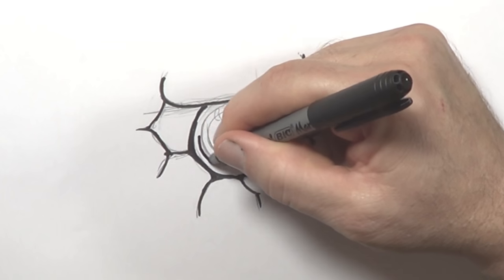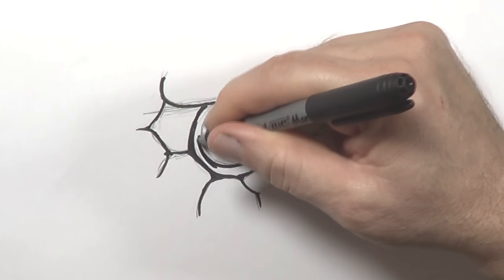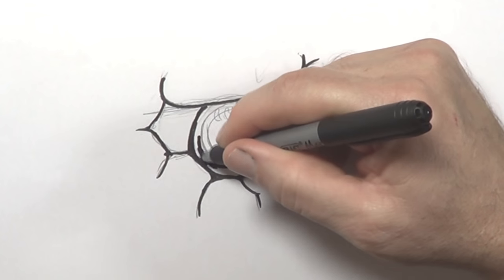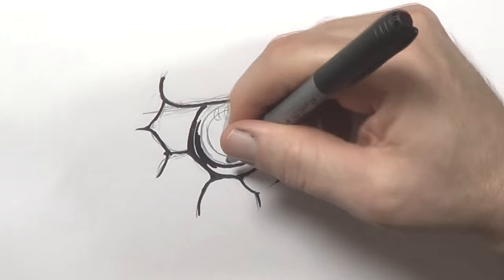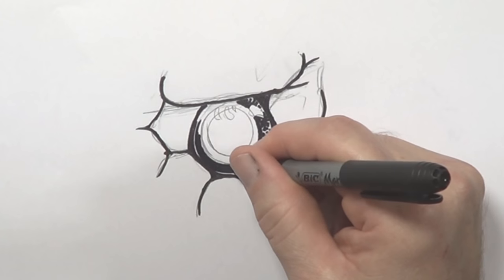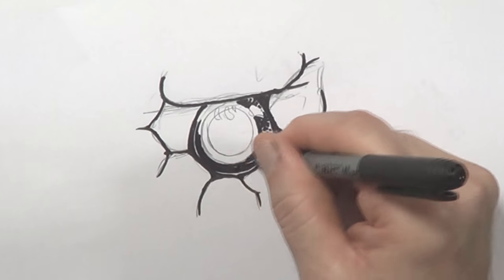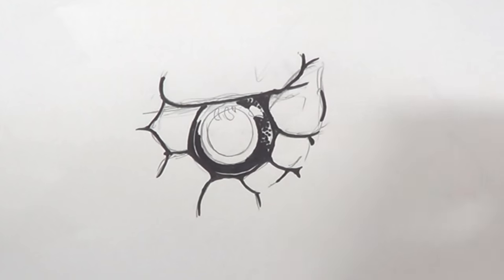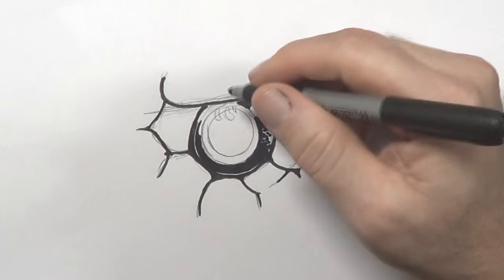And around here I'm going to make this black. I might just leave a little bit of white there. See that? A little bit of white.